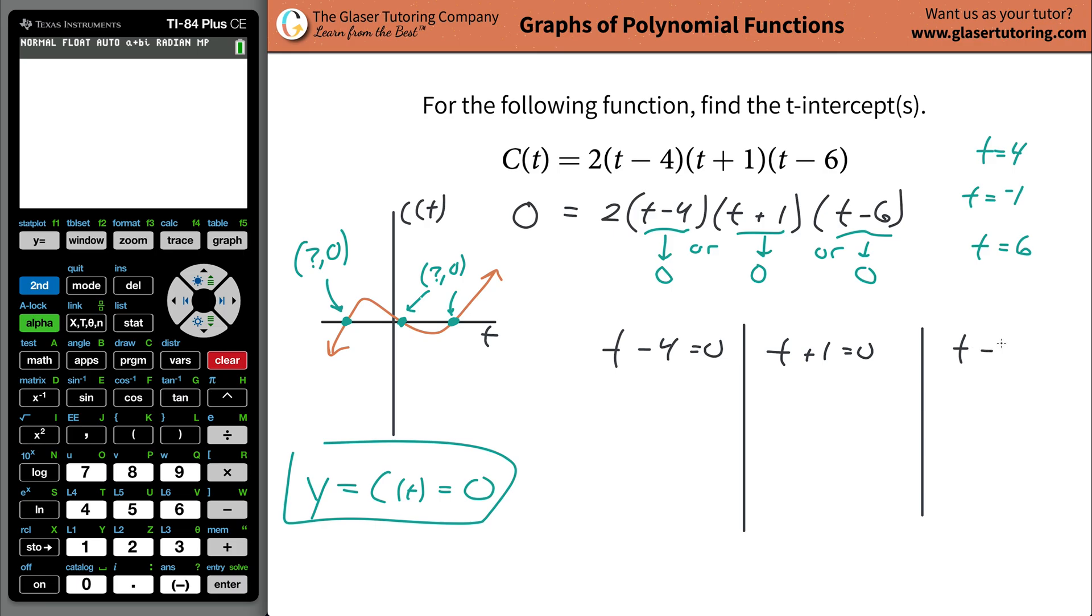Last but not least, same logic. T minus six has to equal zero. So solve this now. Use algebra plus four on both sides. T is equal to positive four. OMG.